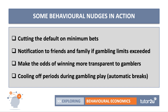Social nudges include notification to friends and family when gambling limits are exceeded — putting a bit of social pressure on you. Making the odds of winning more transparent is another idea. And bringing in automatic cooling-off periods during gambling play — so if you're gambling for half an hour, you might get a three-minute cooling-off period every ten minutes to gather your thoughts. Interrupting the gambling play can cause some people to reflect on what they've won or lost and perhaps take a break.